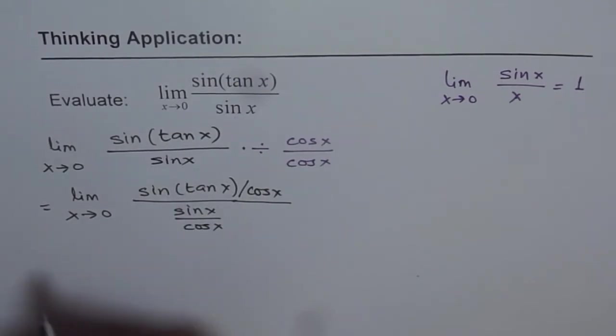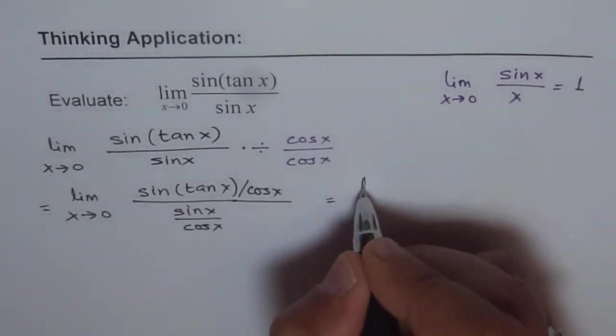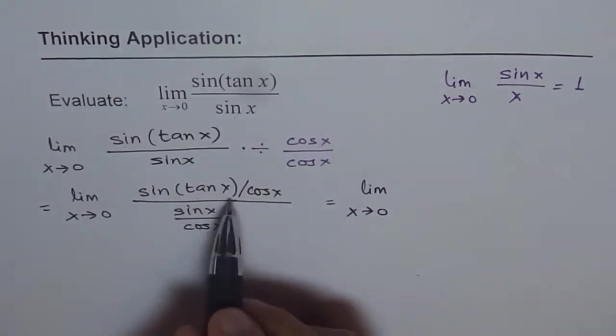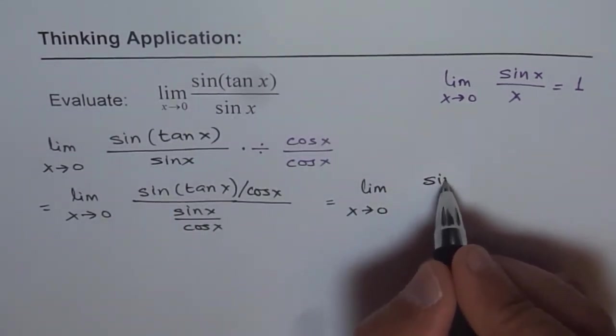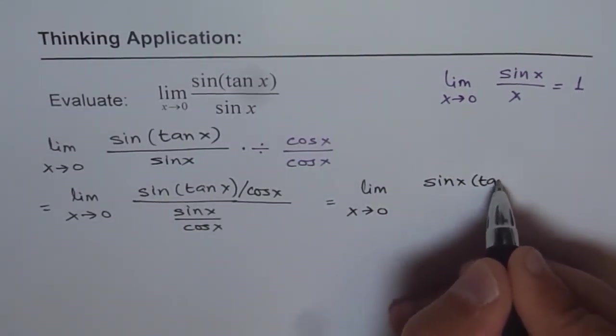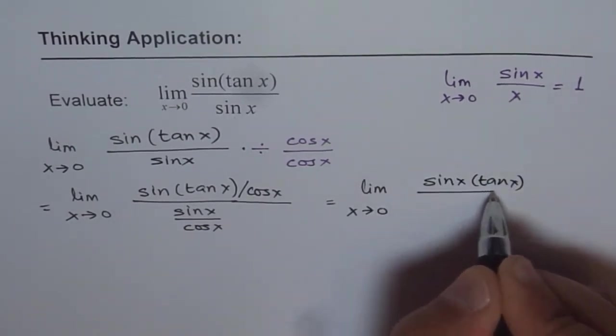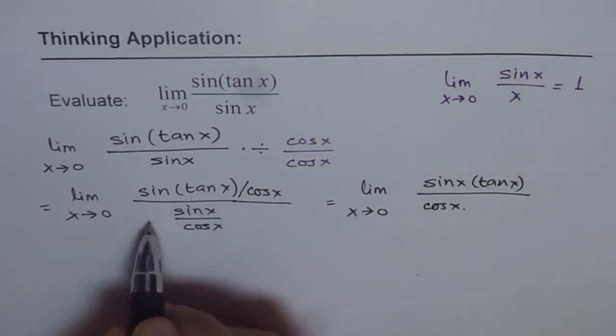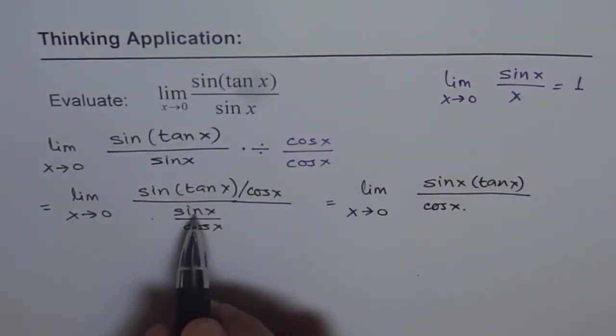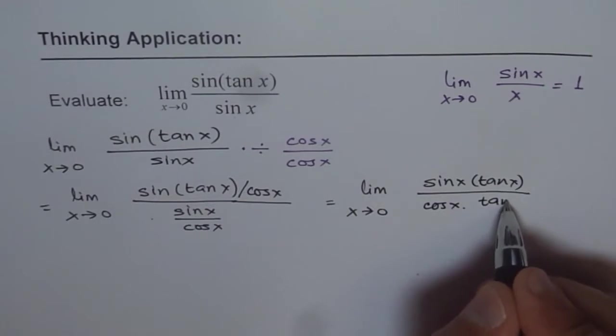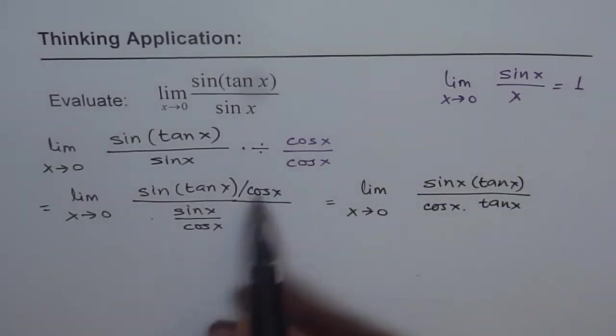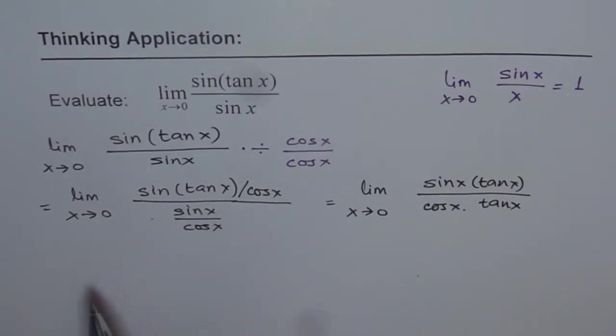Now, you can rewrite this as equal to limit as x approaches 0. So I will write the numerator now as sin(tan x) over cos x. So this cos x I am writing here. And then we have here sin x over cos x which is tan x. So basically both cos x terms come in the denominator.